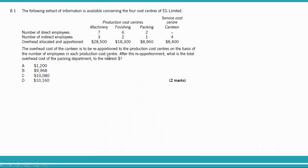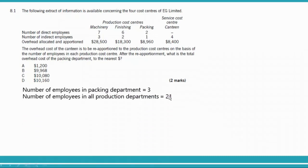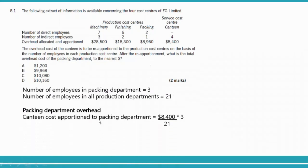The number of employees in the packing department is 3. The total employees across all production departments is 21: 7 plus 3 is 10, plus 8 is 18, plus 3 is 21. So the calculation is: $8,400 divided by 21 (total production employees) multiplied by 3 (employees in packing). This gives $1,200 as the overhead reapportioned to packing.